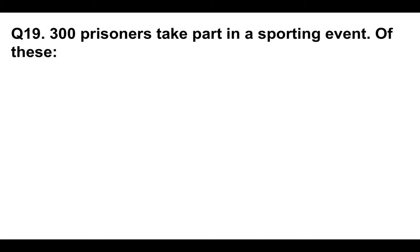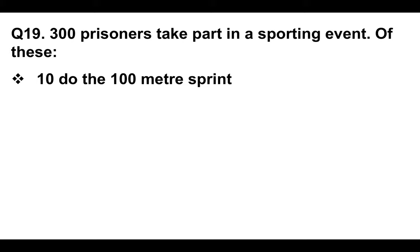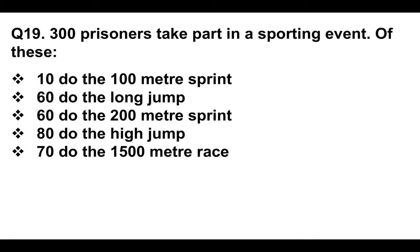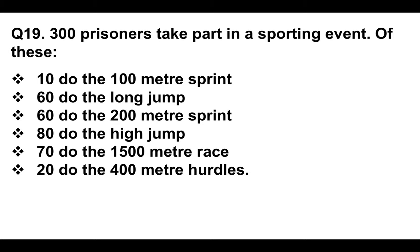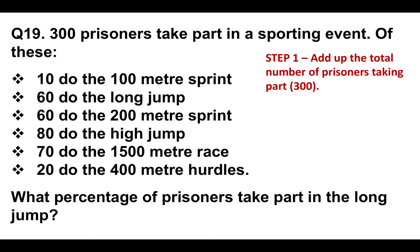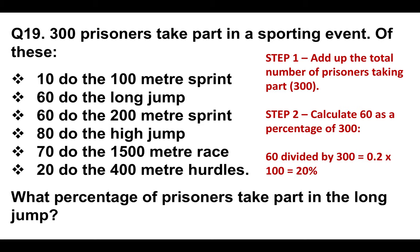Question nineteen: 300 prisoners take part in a sporting event. Of these, 10 do the 100-metre sprint, 60 do the long jump, 60 do the 200-metre sprint, 80 do the high jump, 70 do the 1500-metre race, and 20 do the 400-metre hurdles. What percentage of prisoners take part in the long jump? 60 divided by 300 equals 0.2, multiplied by 100 for the percentage equals 20%. You can use a calculator — make sure you have one before the real test.